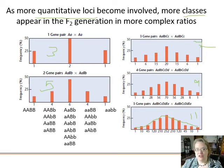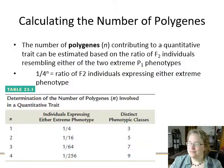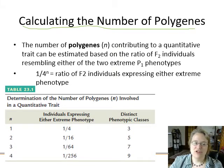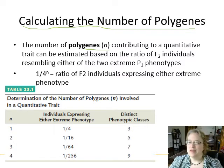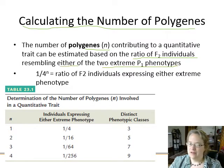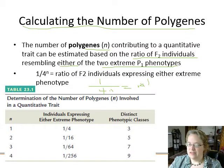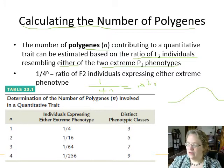Is it possible to figure out how many genes are actually affecting a trait? Yes! You can calculate the number of polygenes, or genes with additive alleles contributing to a polygenic trait. The number of polygenes contributing to a quantitative trait can be estimated based on the ratio of F2 individuals resembling either of the two extreme phenotypes. The formula to solve is: one over four to the n equals the ratio of the extreme phenotype.